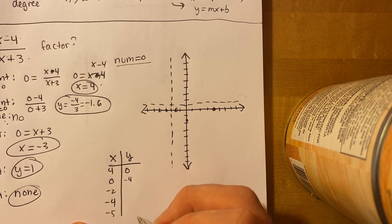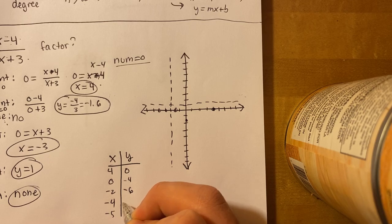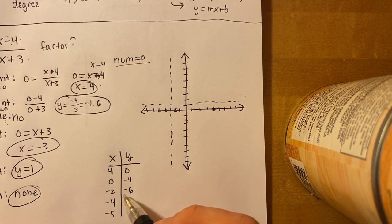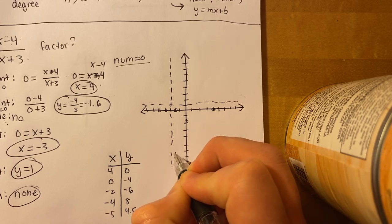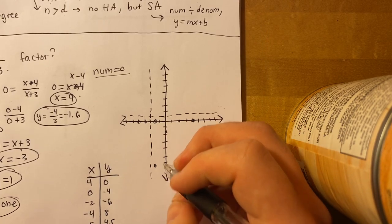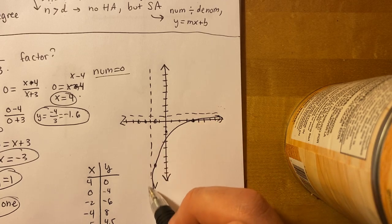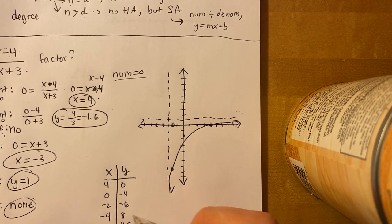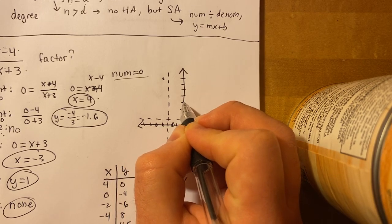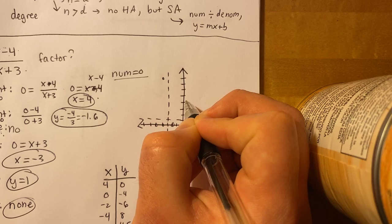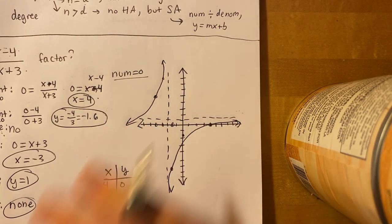I've done these calculations ahead of time — just plug the values into the equation and solve; you can use a calculator. At x = negative 2, I get negative 6, so we're down at (negative 2, negative 6). That tells us the shape on that side hugs between the asymptotes. At x = negative 4, we go up to 8, and at x = negative 5, we get 4.5. So the graph on the other side curves up toward the asymptotes. That's our first graph.